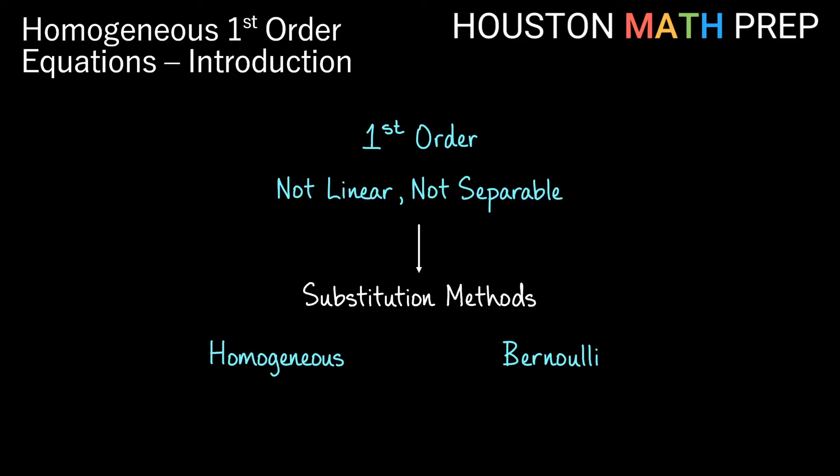One type of equation is called a homogeneous equation, which will be one type of substitution, the other is called a Bernoulli equation, that will be a different type of substitution. In this video we're going to talk about the homogeneous first-order equations and give you an idea of how to work those.